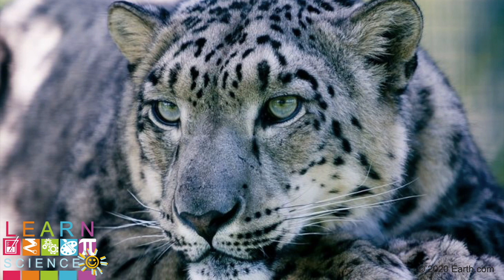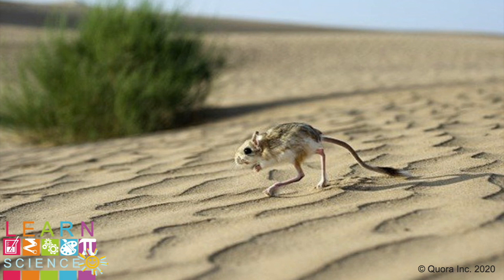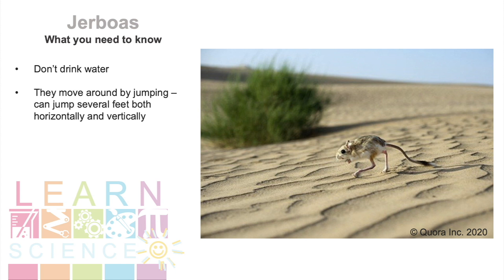Do you know what animal this is? Yes, it's a snow leopard. Snow leopards can be found in mountain ranges across Asia, including the mountain ranges of the Gobi Desert. They are great jumpers, able to jump as far as 15 metres. They also have long tails, which they use to help with balance. Any ideas what this creature is? It's a jerboa. Surprisingly, jerboas do not drink water — they get all the water they need from their food, which is mostly plants and insects. These animals do not walk or run, but jump around to move. They can jump several feet, both in the horizontal and vertical direction. How cool!